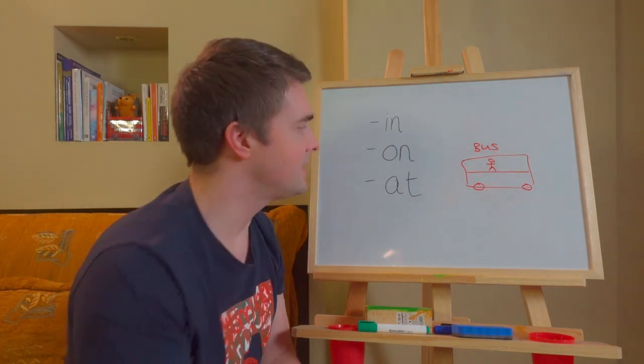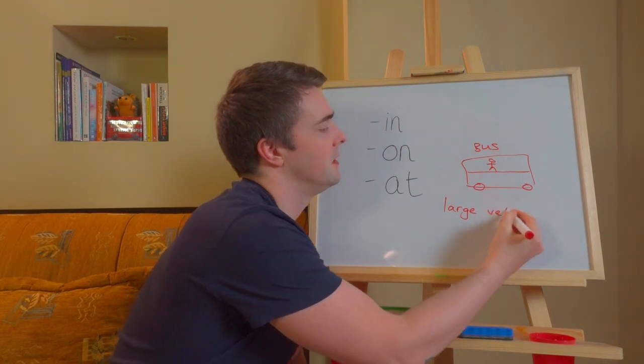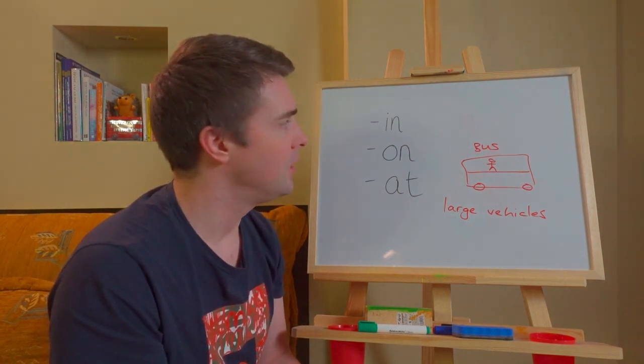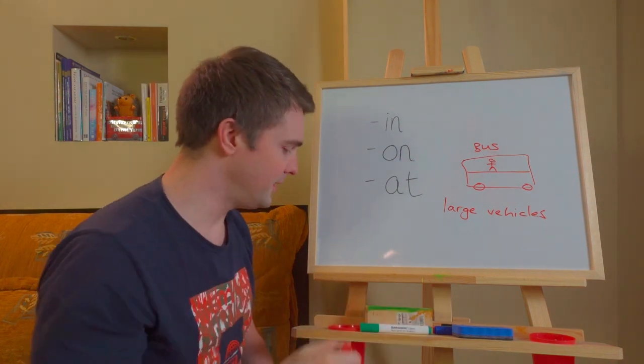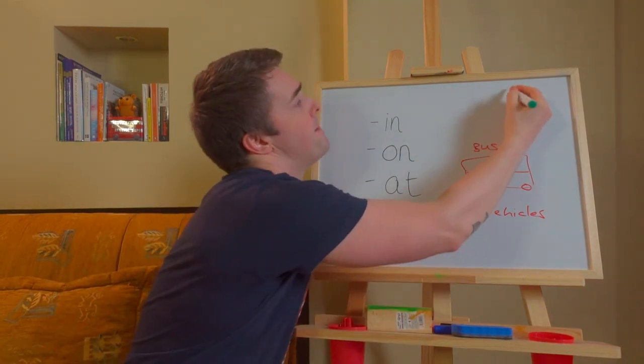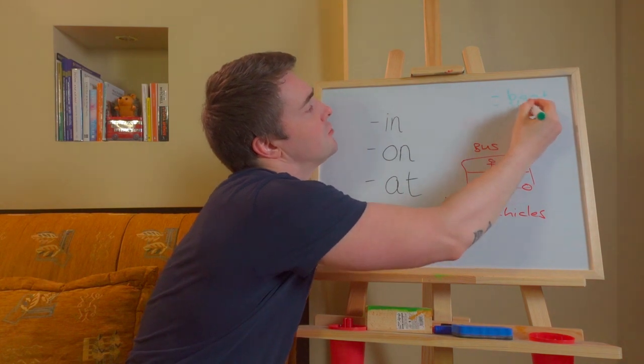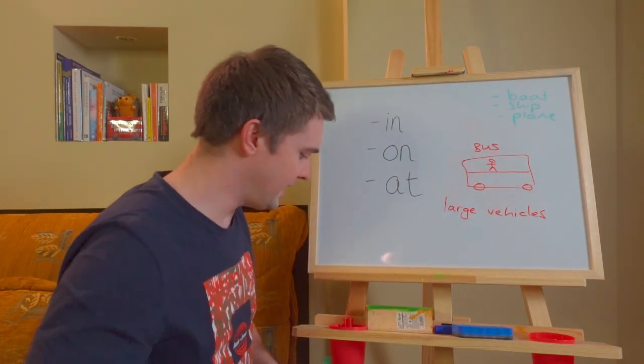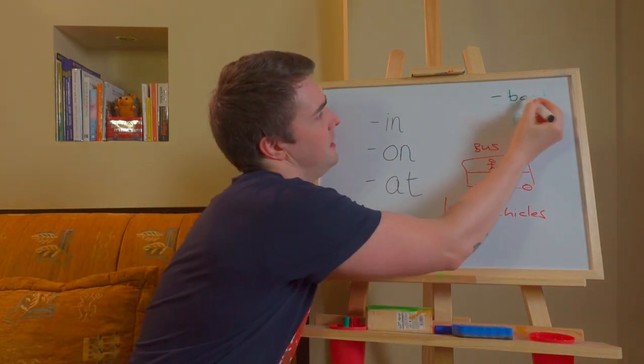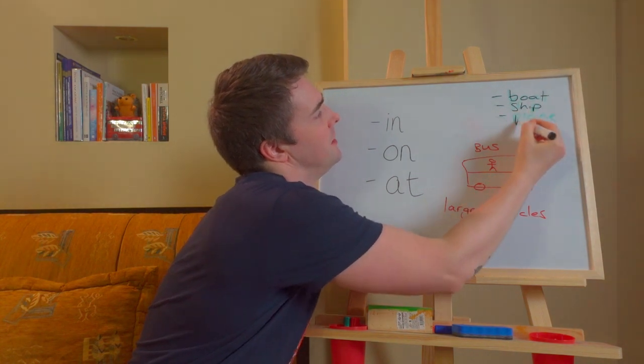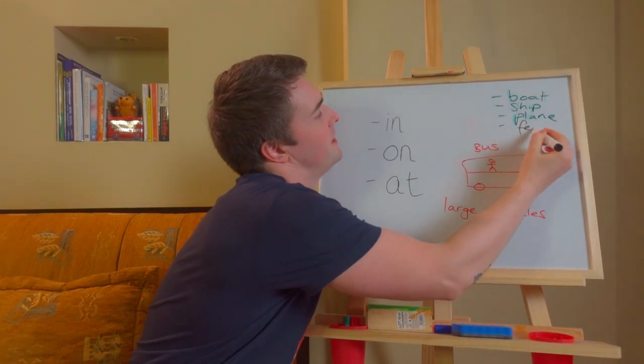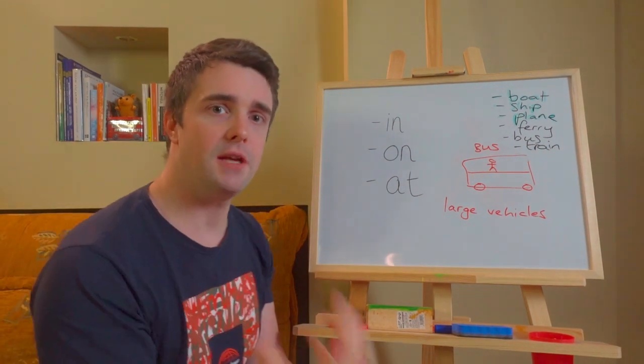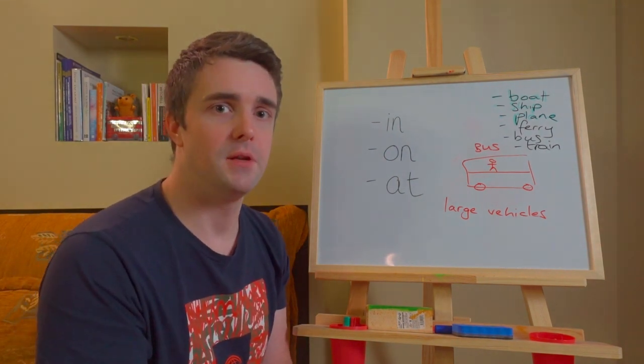We say on the bus. And so what I want you to understand here is that when we talk about large vehicles, and you have to use your own judgment really to feel what a large vehicle is, then we say on. So I'm going to give you a list of examples. Like a boat. I will be on. A cruise ship. I'm on it. A plane. I'm on. Boat. I'm on a boat. I'm on a ship. I'm on a plane. I'm on a ferry. I'm on a bus. A train.